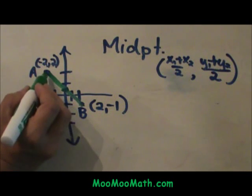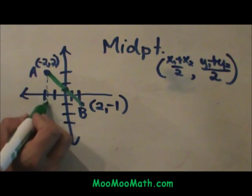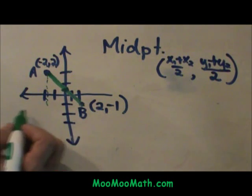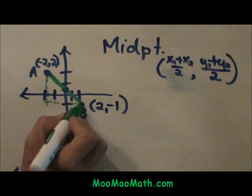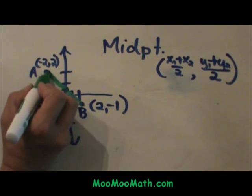I am going to draw a right triangle. I am going to take the point A and dot it down until I get even with point B. Then I am going to go across until I get over to point A. Now I have created a right triangle.